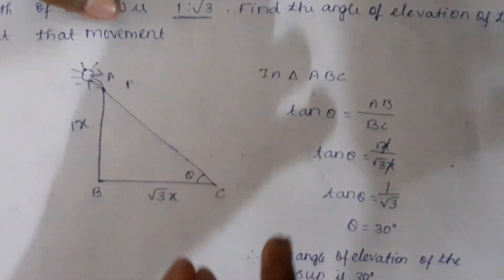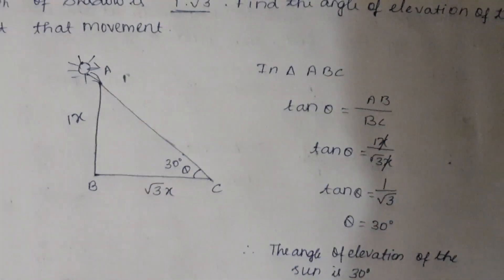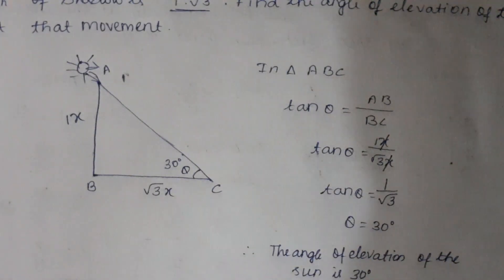The angle of elevation of the sun at that moment would be 30 degrees. So that's all for today's video. Thanks for watching.